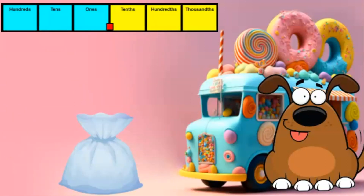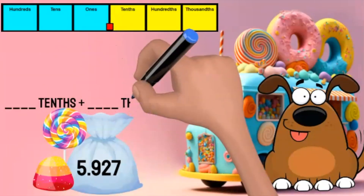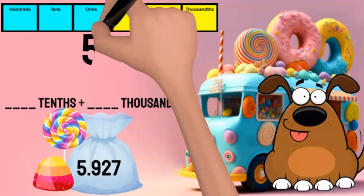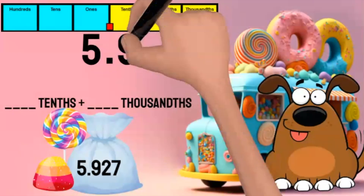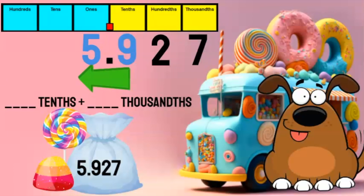The next order is for 5 and 927 thousandths of a pound of lollipops and gumdrops. To fill this order, I must find out how many tenths and thousandths are in this number. I will rewrite it in the place value chart. To determine how many tenths are in this number, I look at the digit in the tenths place and the digits to the left of that place. I can see there are 59 tenths.